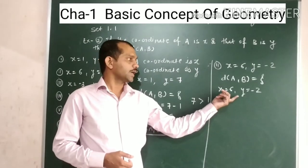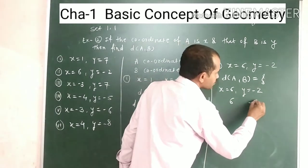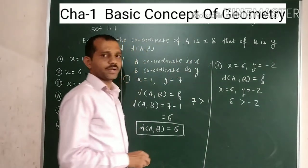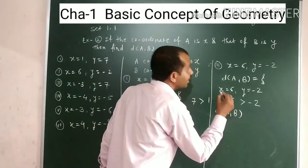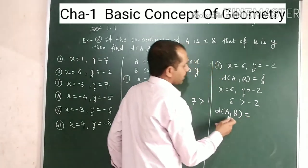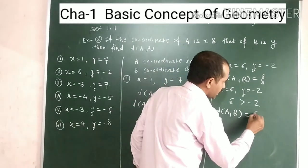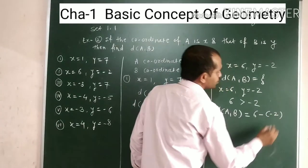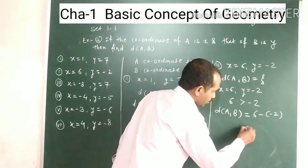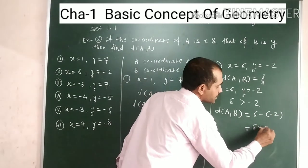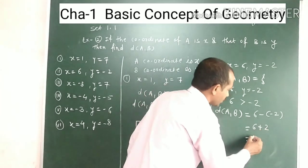So, find the distance between A and B. The distance between A and B: 6 minus minus 2 equals 6 plus 2, which equals 8.